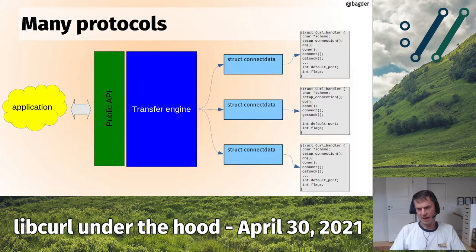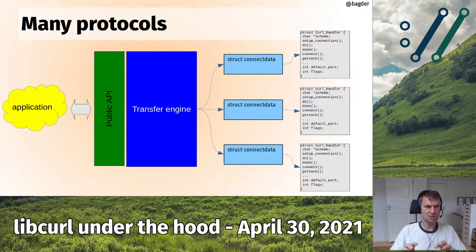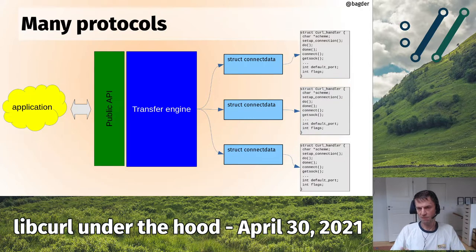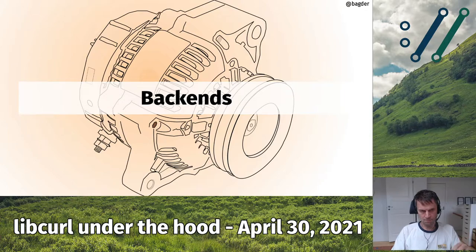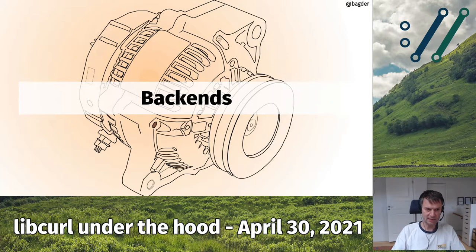TLS versions of protocols have their own curl handlers. For example, HTTP and HTTPS have separate handlers with shared functions plus a few that differ. Connections identify their protocol via a curl_handler pointer, which drives the protocol-specific behavior.